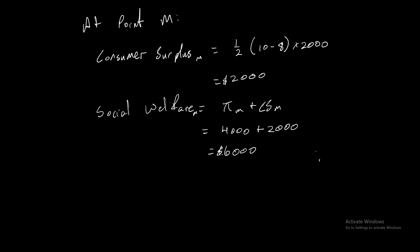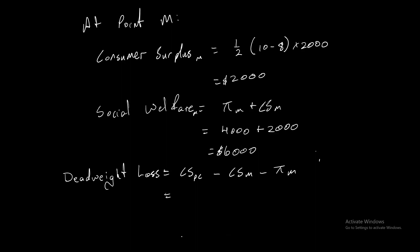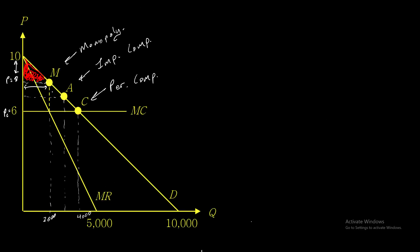The deadweight loss doesn't add any value to the economy — it is value lost due to monopolization. To calculate it: consumer surplus for perfect competition minus consumer surplus for the monopoly minus profit of the monopoly. That is 8,000 minus 2,000 minus 4,000, giving a deadweight loss of $2,000. This green area on the graph is the deadweight loss due to monopolization.